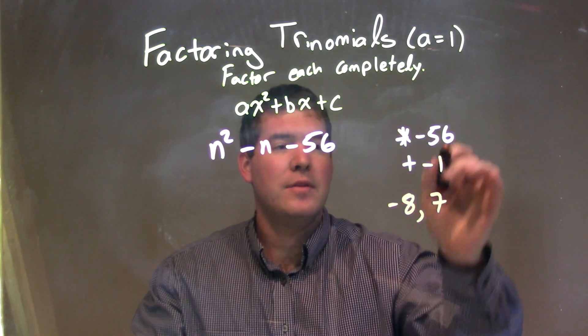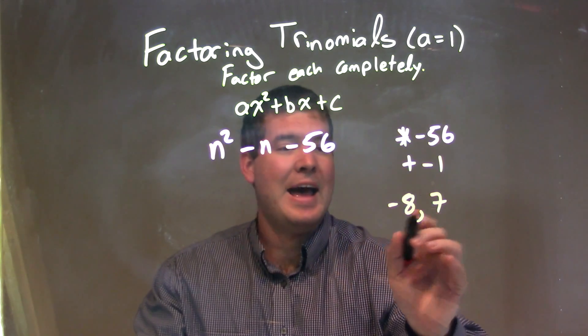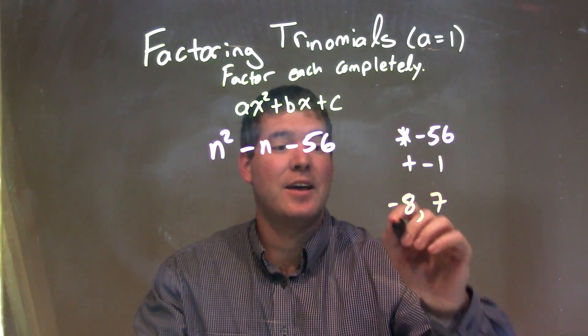So negative 8 times 7 does give me my negative 56, but when I add the two together, I get negative 1.